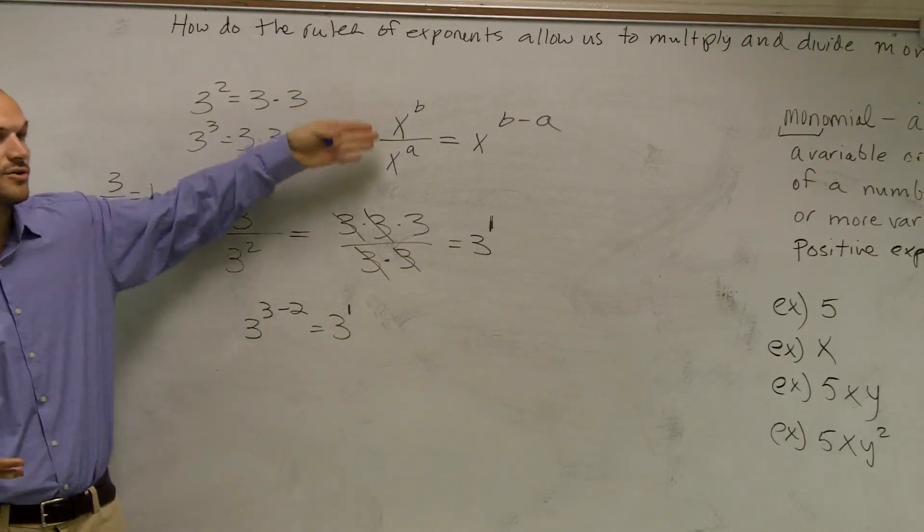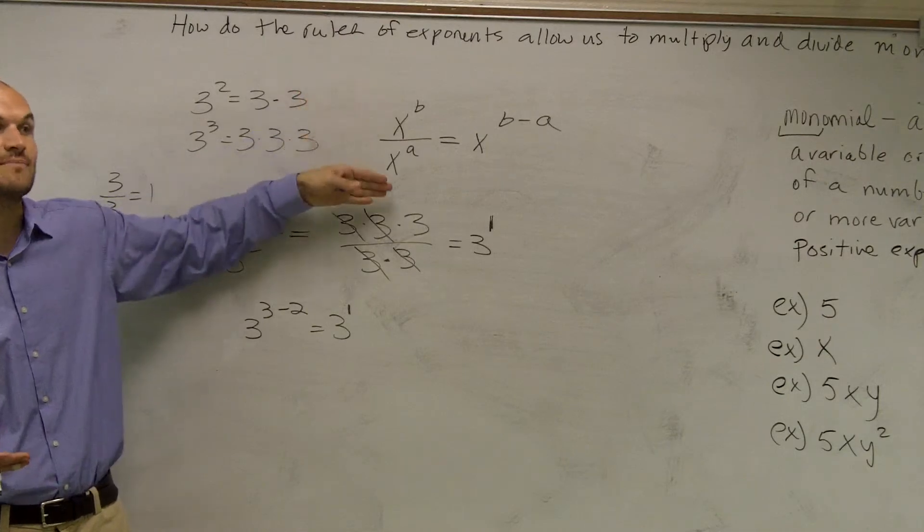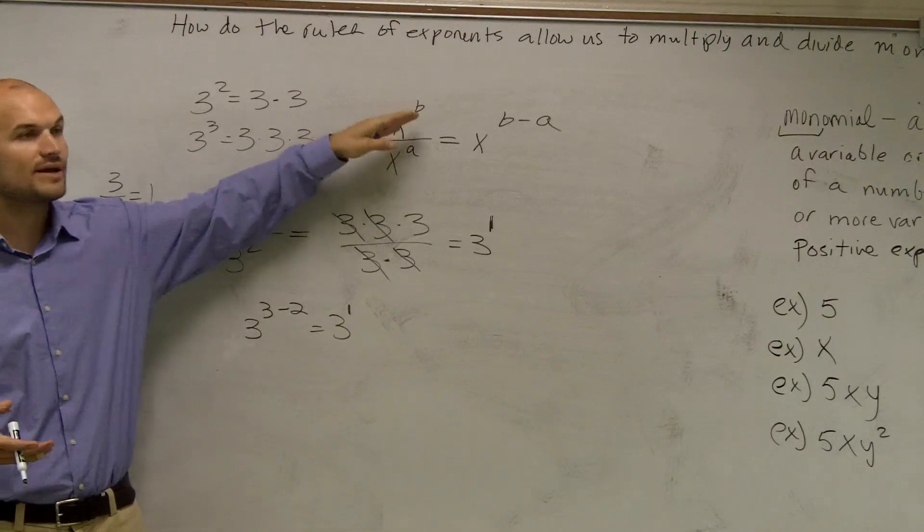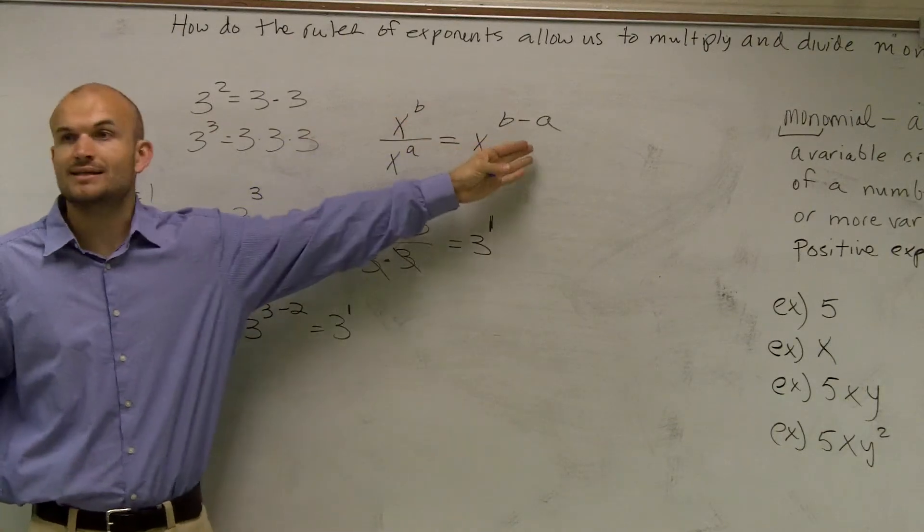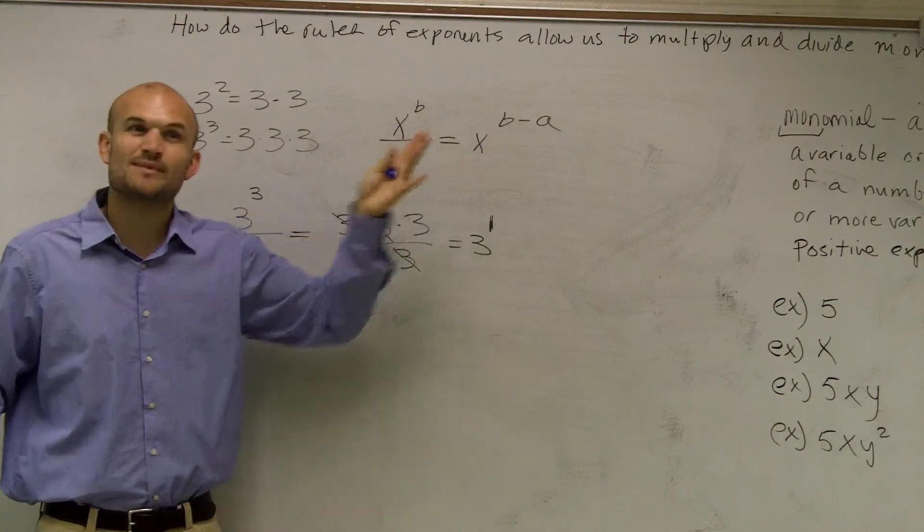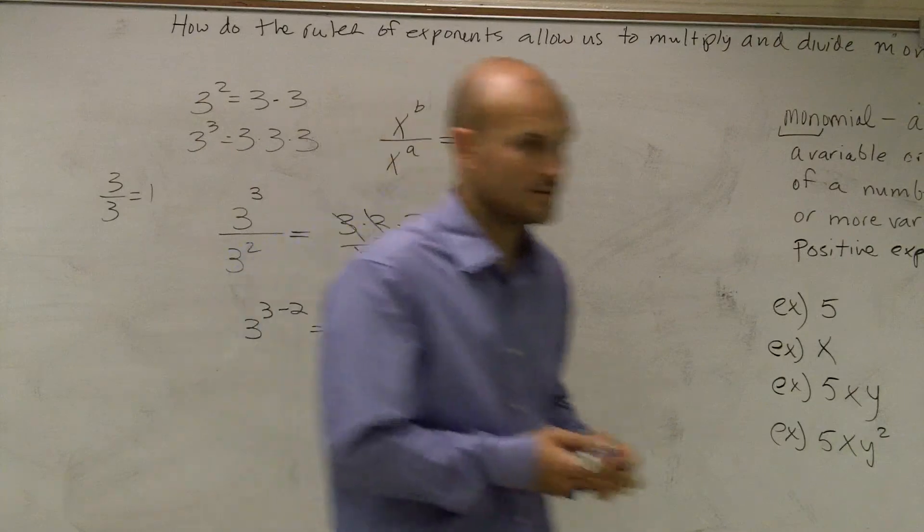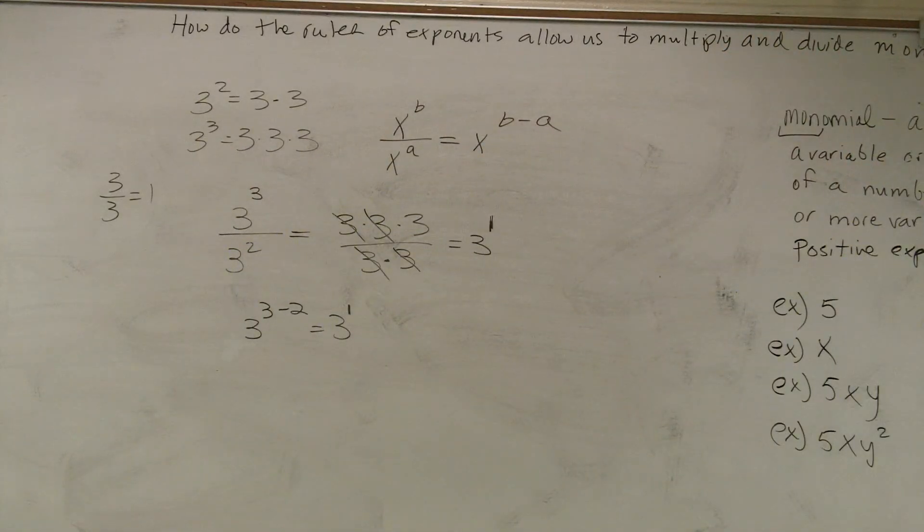So, ladies and gentlemen, that is going to be your rule for when you divide monomials with exponents, that you're simply just going to, when you divide, you're going to subtract the exponents. Make sense? Just make sure the bases are the same, OK? So,